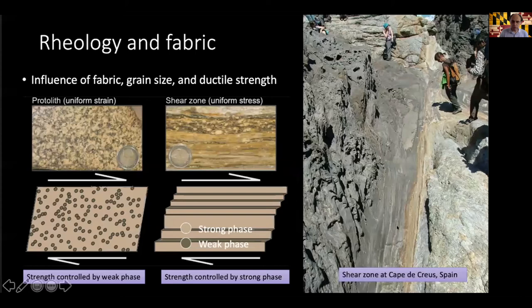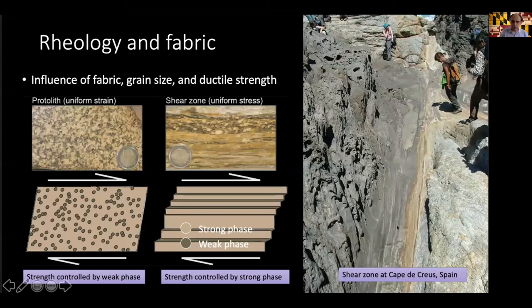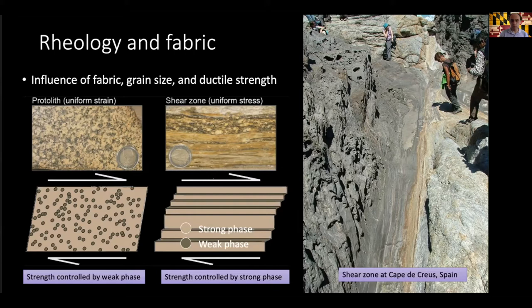Looking into the field, we see a ductile shear zone from Cap de Creus showing a highly deformed part of rock, much more deformed than the surrounding regions. Deformation at all scales is localized onto specific features. On the left, we see how the fabric of this shear zone could change the rheology of the rocks. We're working on upscaling from the microscopic or hand-sample scale to understand the development of these shear zones and their influence on lithosphere rheology.